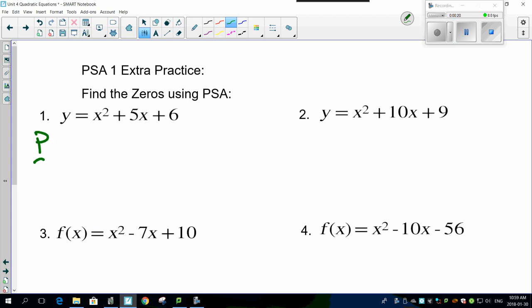Awesome! PSA is here. Product is 6, sum is 5. Find two numbers to multiply to give me 6. Simple: 2 and 3, because 2 plus 3 adds up to 5. So your answer is 2 and 3.